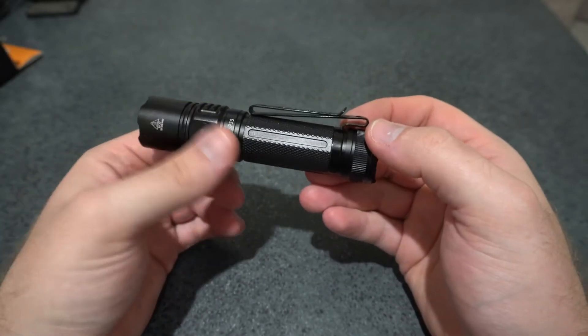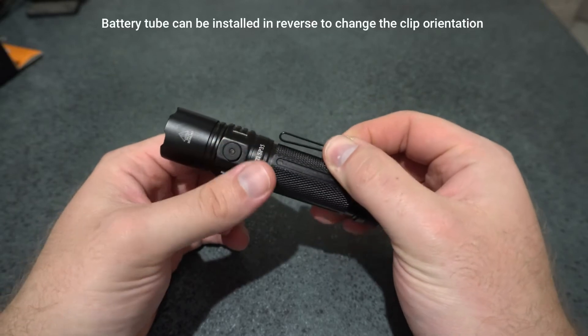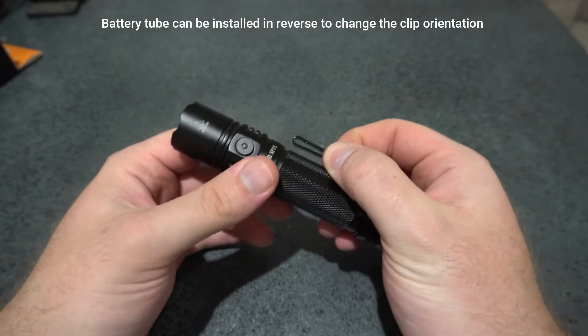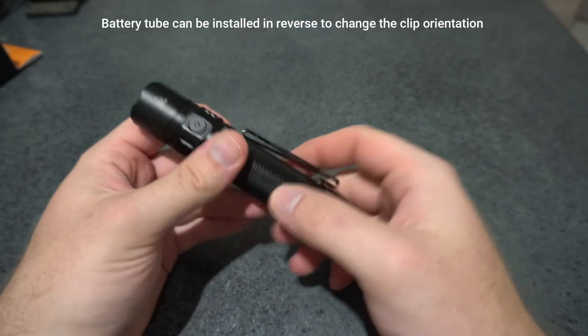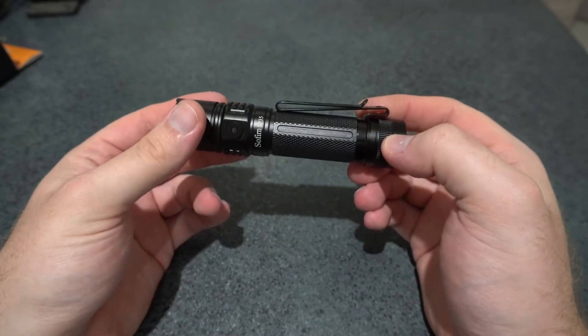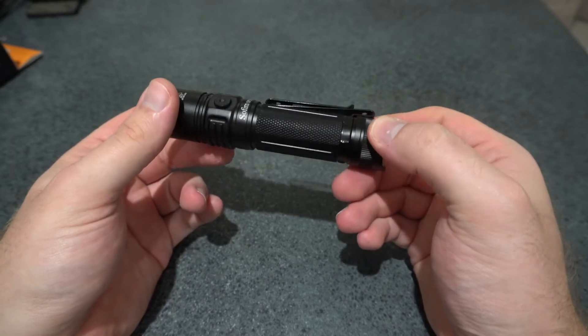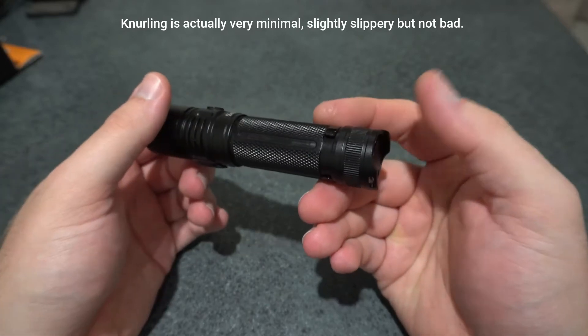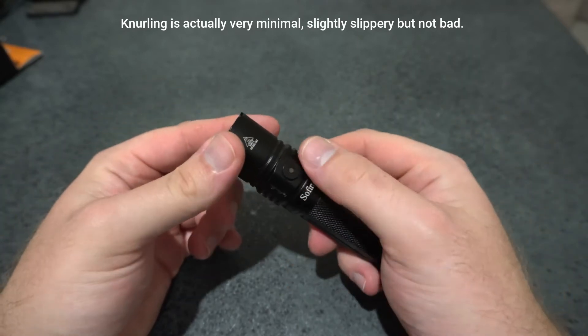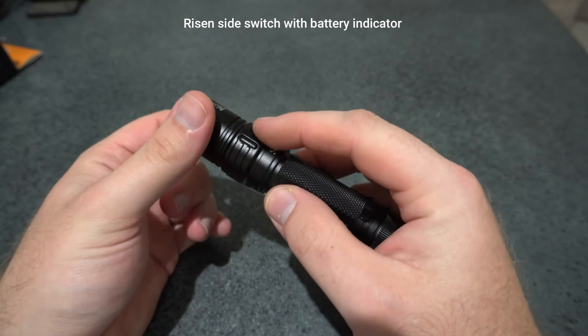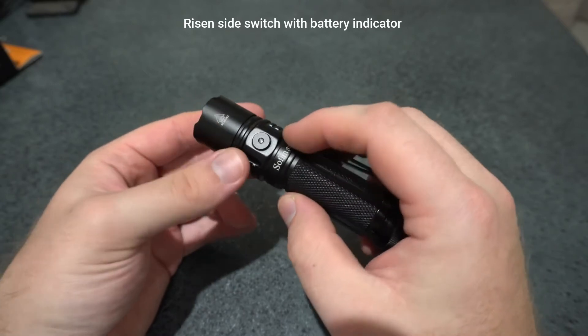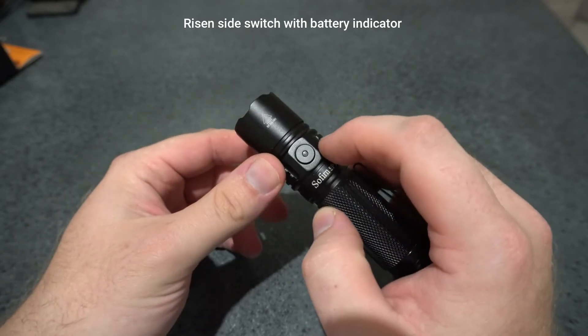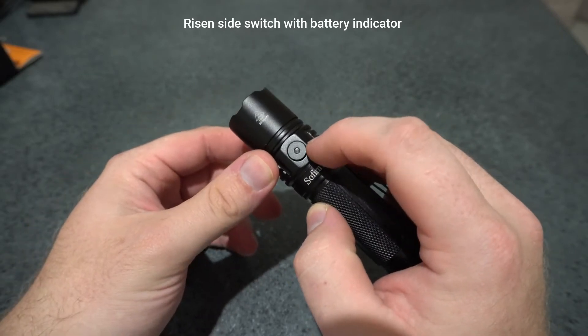This is the first model that Sofirn have used with a double sided clip. It's quite nice, nice and firm. Good knurling on the battery tube. We've got a resin side switch - it's good for trying to find it in the dark. It's got a battery status indicator in the switch.